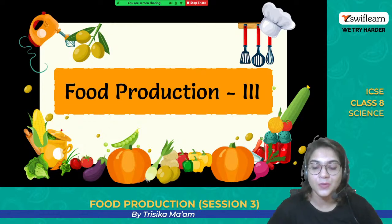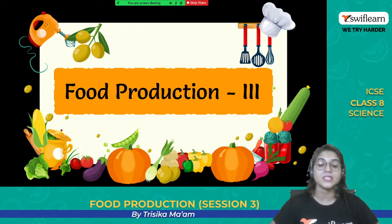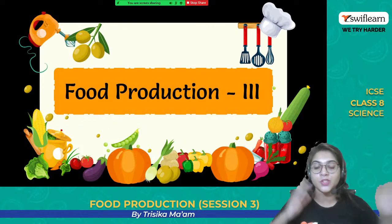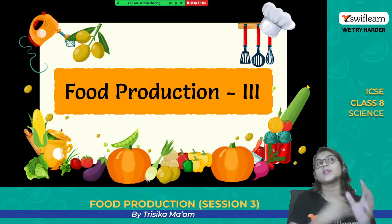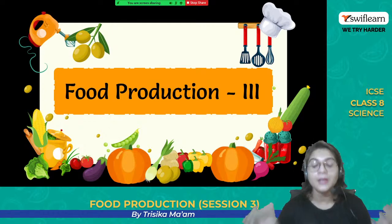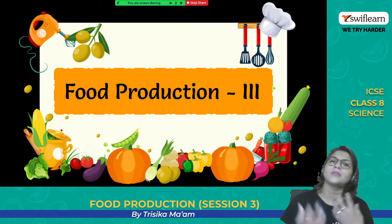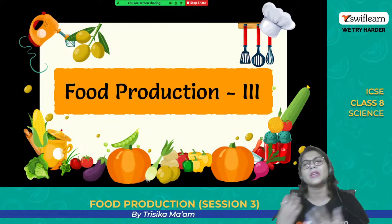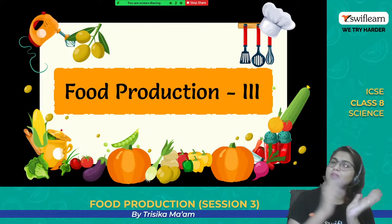Let's now move on to today's topic. This is the third session of food production. We have discussed a lot about food production in the first two sessions. In the first session, we studied about the different microorganisms used to make different types of food — bacteria, algae, fungi like yeast — all used in bakeries for making different types of bread, buns, and all.